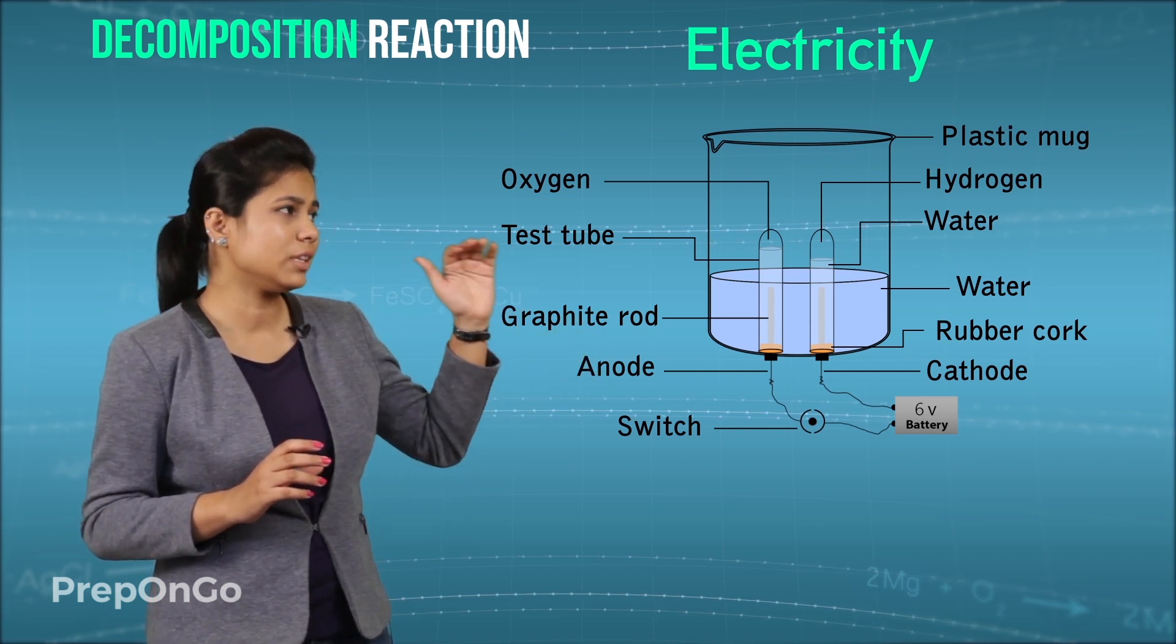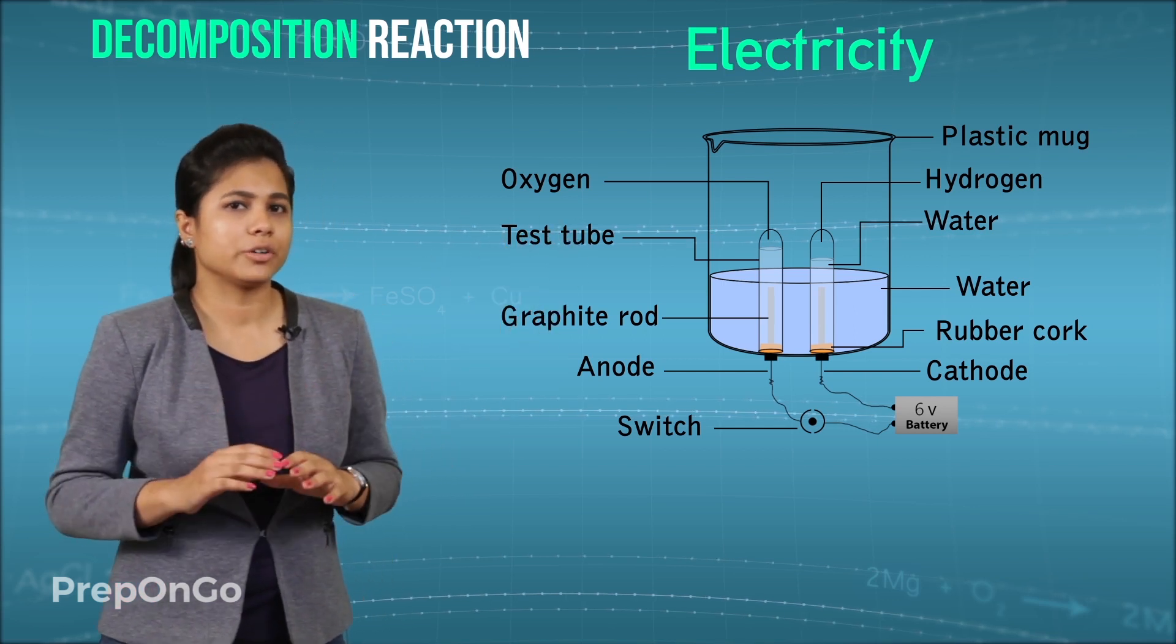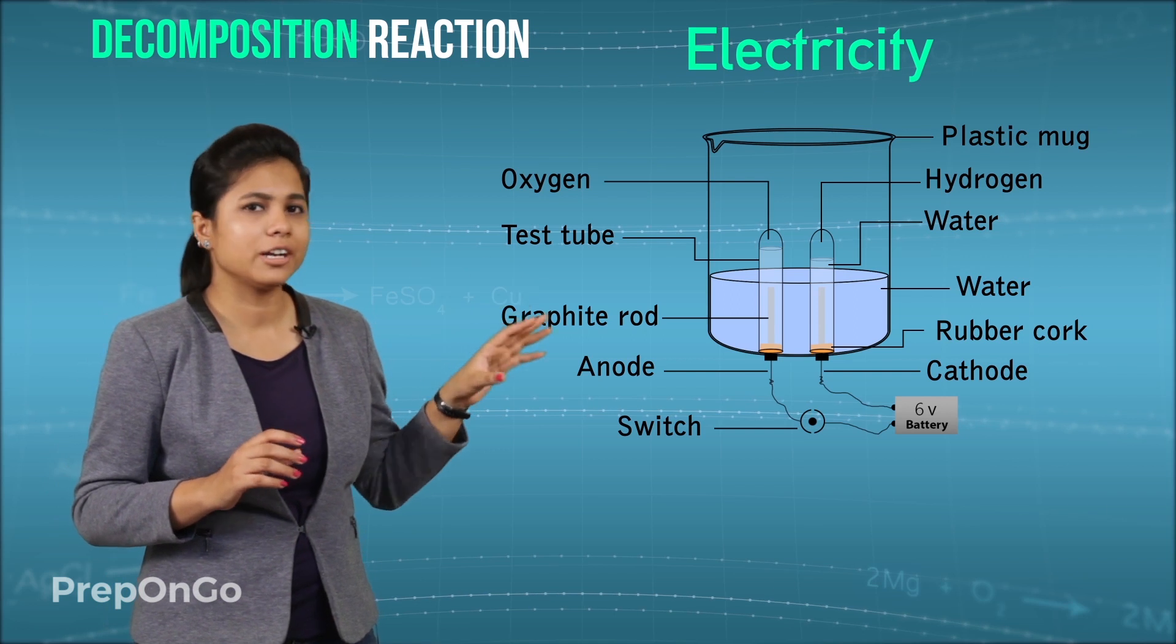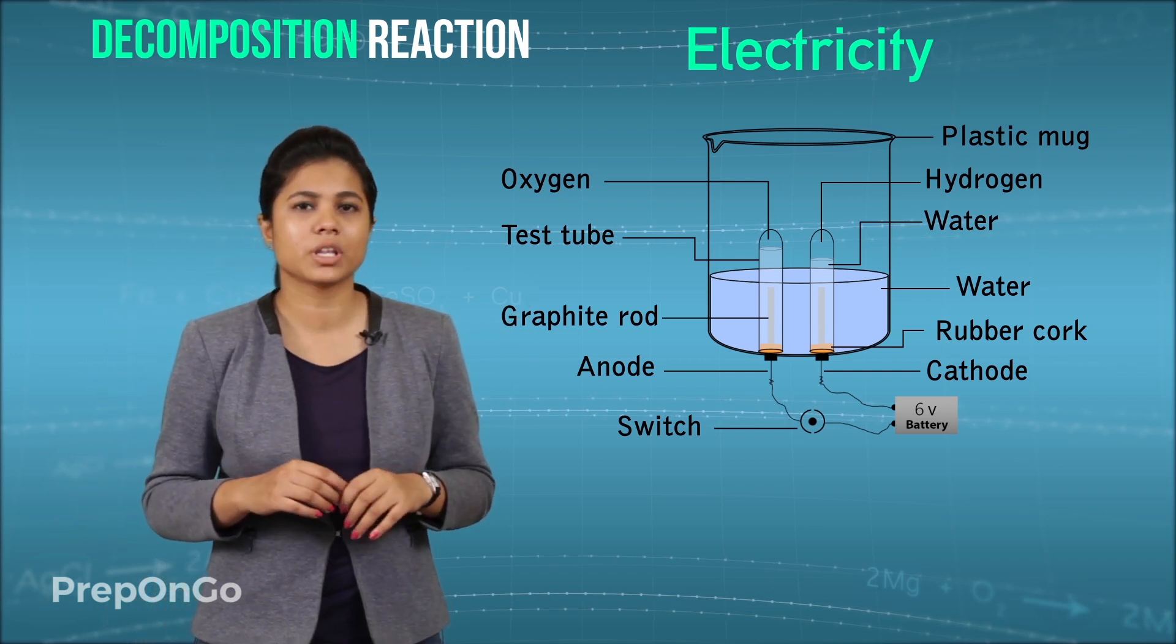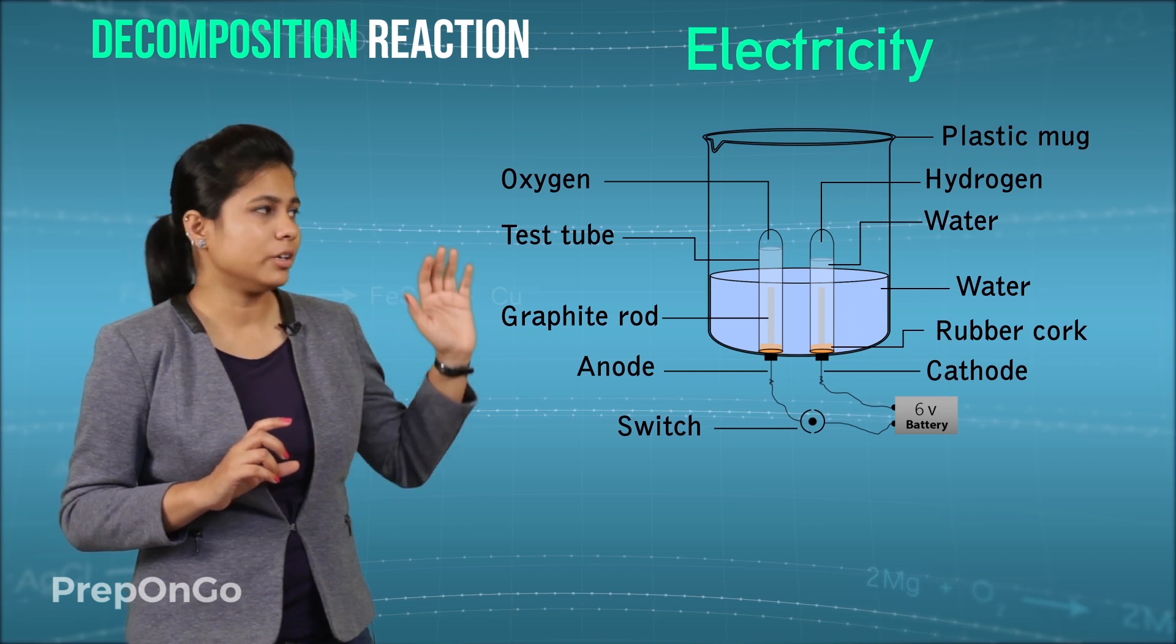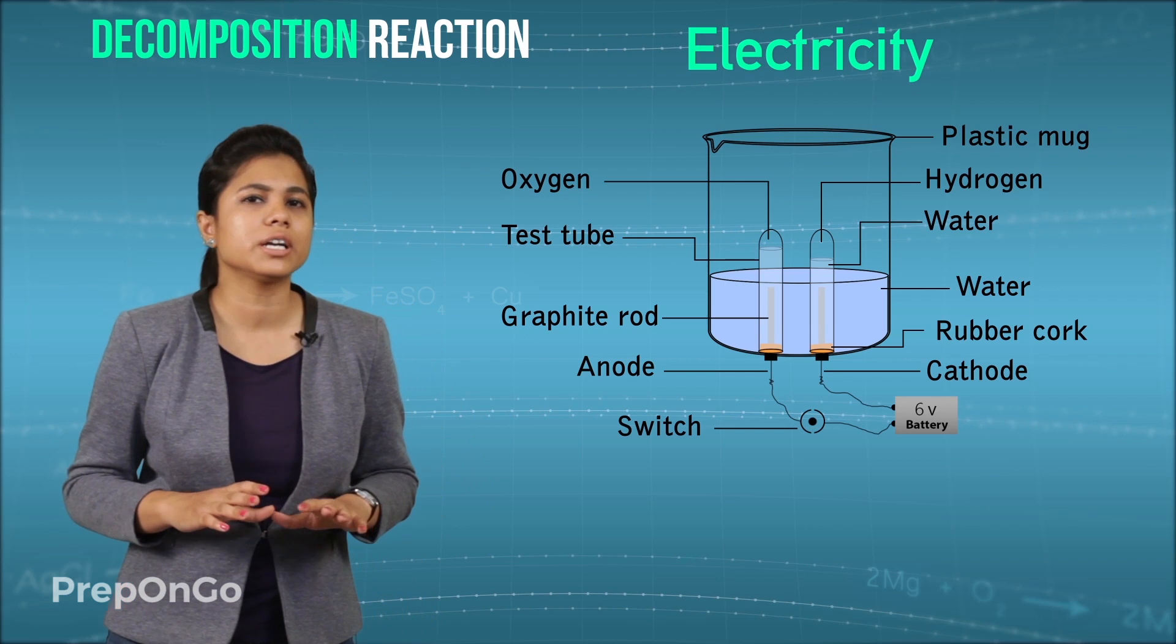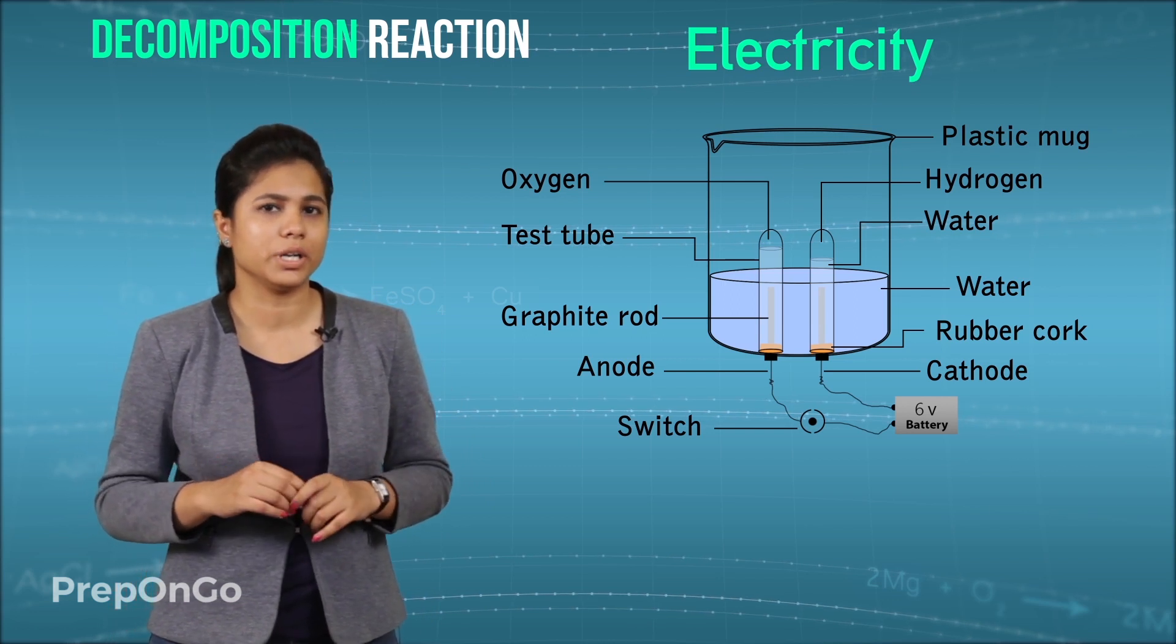Now we will fill the mug in a way that these electrodes are immersed with water. We have also added few drops of sulphuric acid. Now I have taken two test tubes filled with water and inverted them on glass electrodes. Now I will switch on the current and let the setup like this for few minutes.